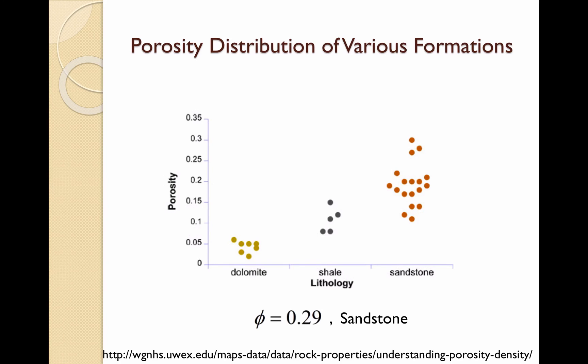A test of various core samples were examined from different formations and their porosities were recorded. Displayed on the figure is the distribution of these porosities based on the lithology of the rock. It can be seen that the sandstone formations display higher values of porosity ranging from 0.1 to 0.3. Looking back at our example problem, we can assume that our sample core with a porosity of 0.29 is from a sandstone formation.